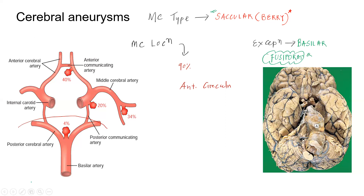If they ask what is the single most common location, it has to be the junction of the anterior communicating artery and the anterior cerebral artery. From the image, you can understand that aneurysms usually happen at branch points where the vessel wall is maximally thin.